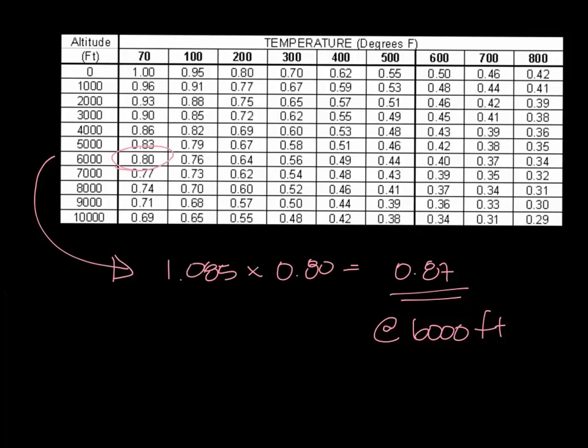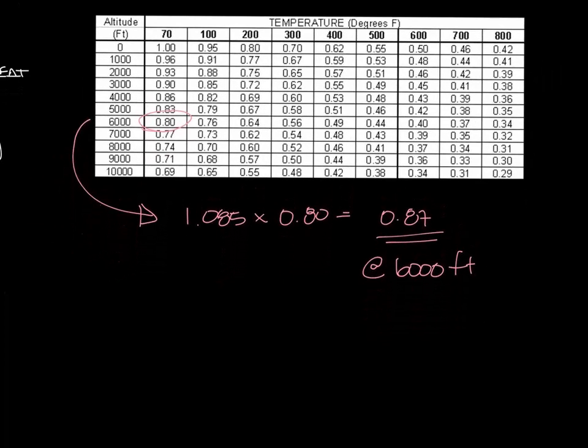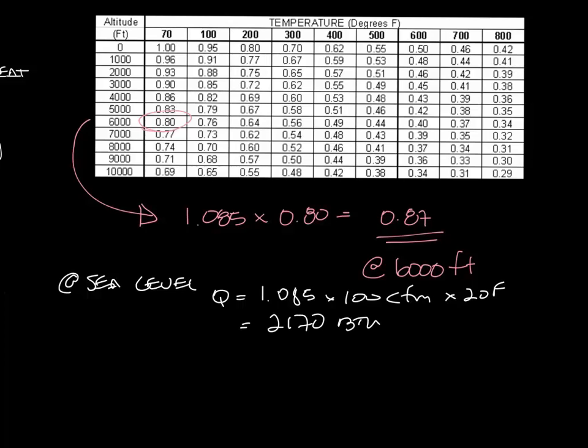So let's make a little room and show what that does when you plug in numbers into the load equation. So at sea level, our load equation is going to be Q equals 1.085 times let's use 100 CFM and a delta T of 20 degrees. That's going to equal 2170 BTU.